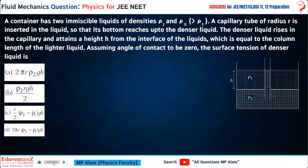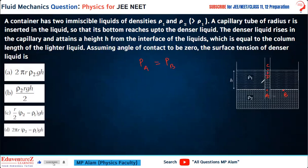First, we understand that the pressure at the same horizontal level is the same, and the reference line must pass through the same liquid. So the pressure at point A is equal to pressure at point B. We can also identify reference point C.